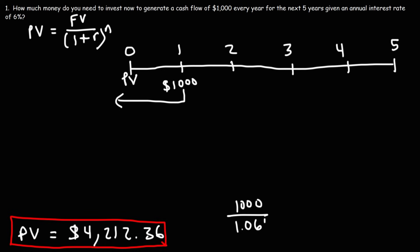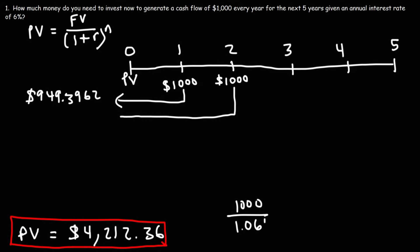1,000 divided by 1.06 is $943 — let me correct that in a moment. What about $1,000 two years from now? To get that, it's 1,000 divided by 1.06 raised to the second power. So $1,000 two years from now is worth $889.9964.